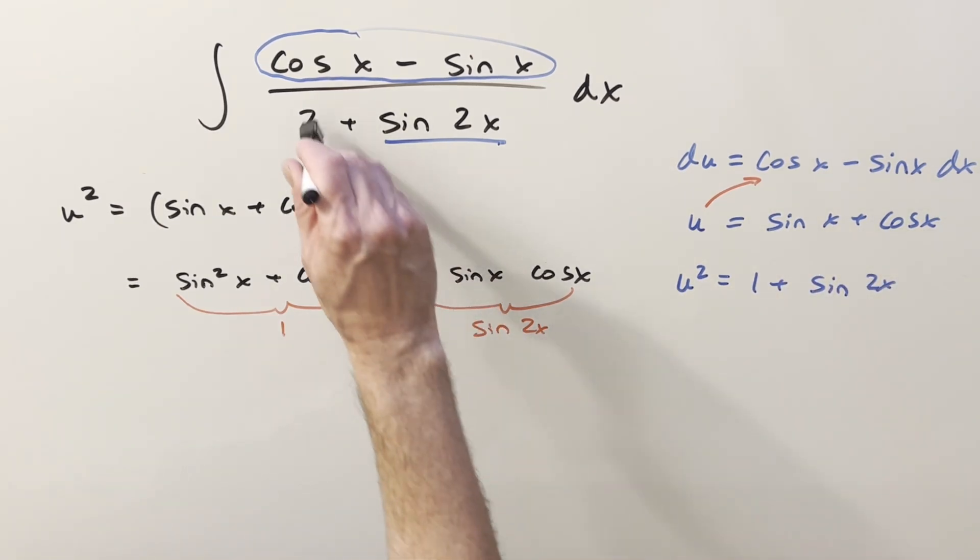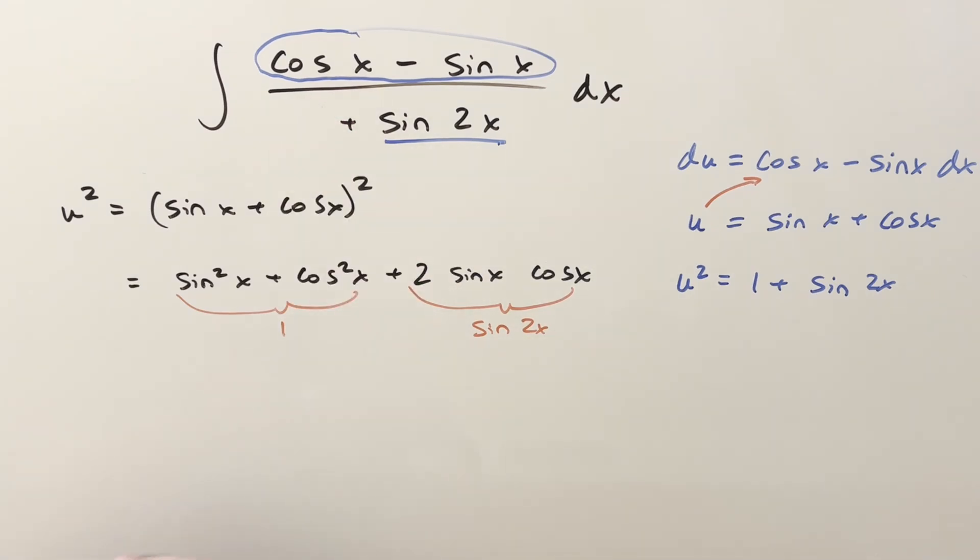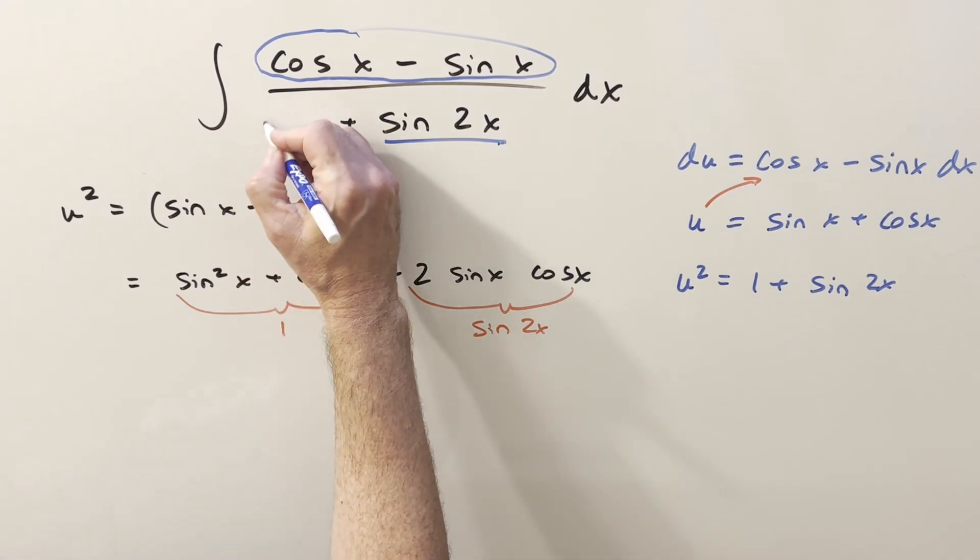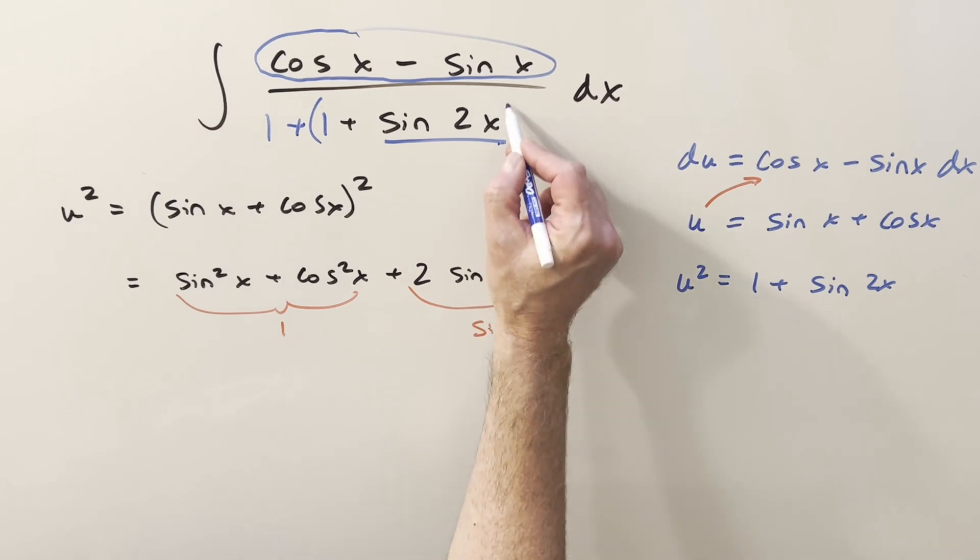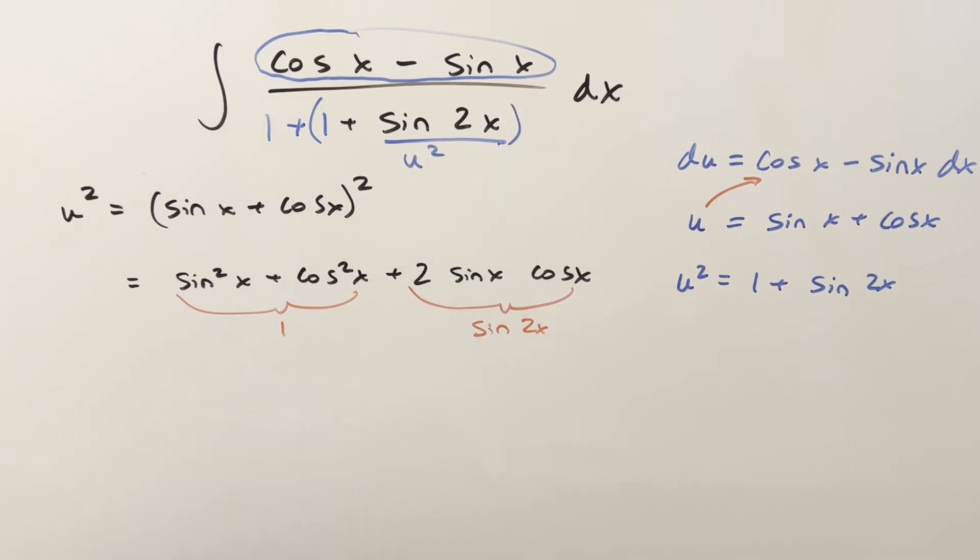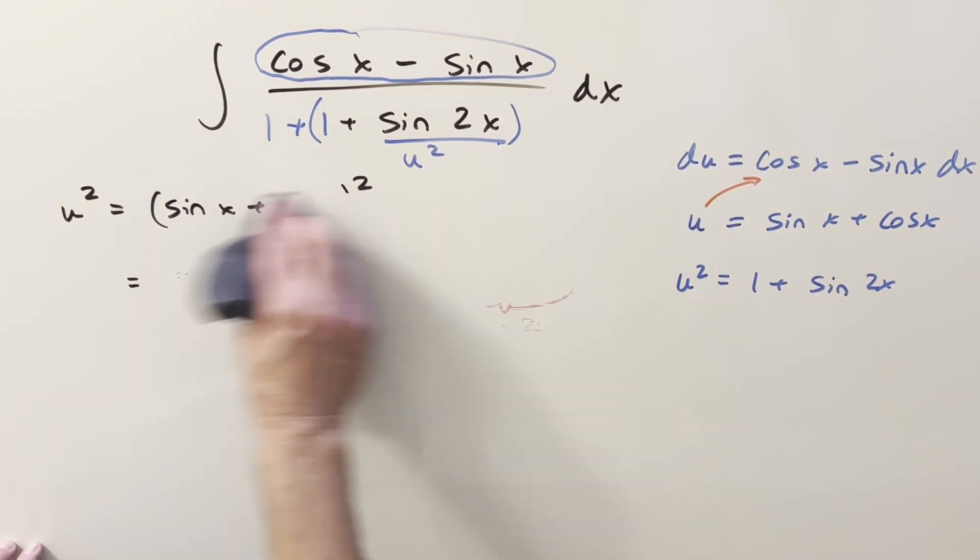So in order to get a 1 plus sine 2x, all I need to do is let's just break up this 2. I can write this as 1 plus 1. So we have our u squared value right here. And then we can get rid of this junk over here.